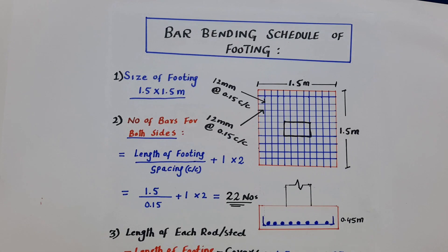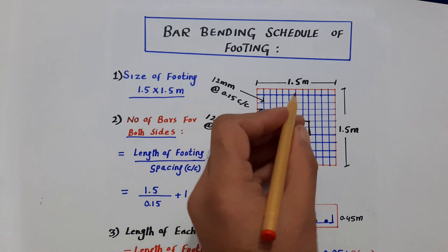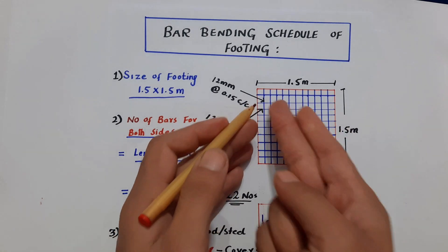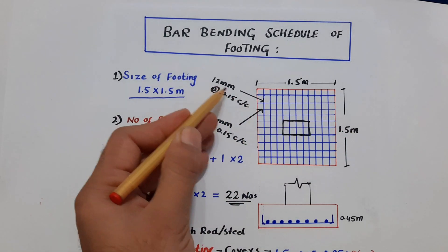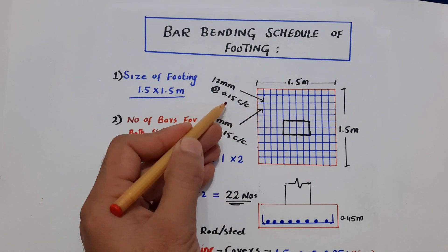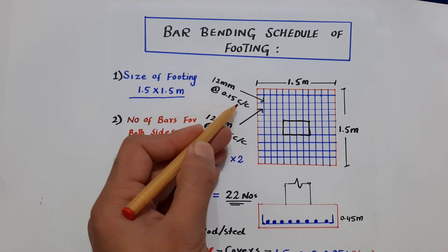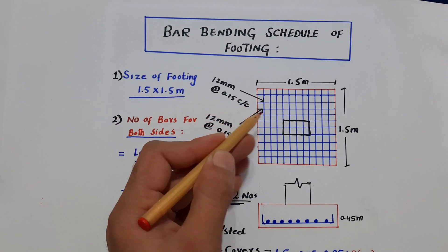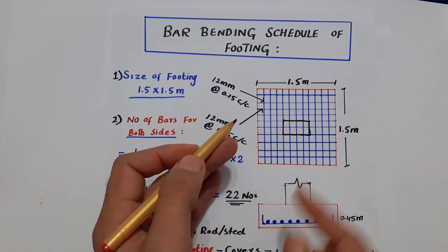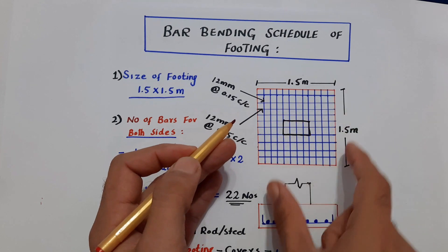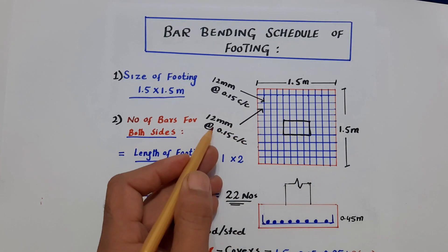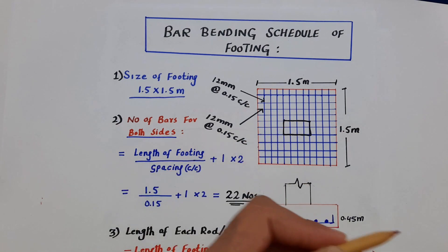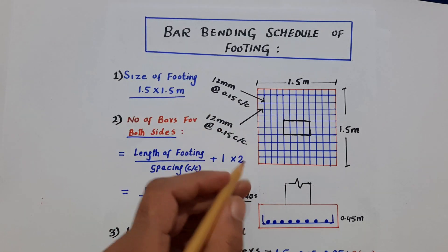The size of the footing is 1.5 by 1.5 meters. We have main bars and distribution bars, both with the same diameter of 12 millimeters. The spacing is 0.15 meters, or 15 centimeters, or 150 millimeters center to center. Main bars and distribution bars are the same because this is a square footing.